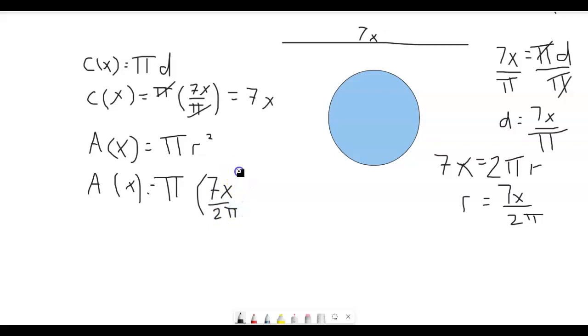And remember, we have to square that. We have to square that. So we have to multiply this by itself. So that's going to be equal to pi times, you can square the top and the bottom separately. So the 7x squared is 49x squared, which is 7 times 7, which is 49, x times x, which is x squared.